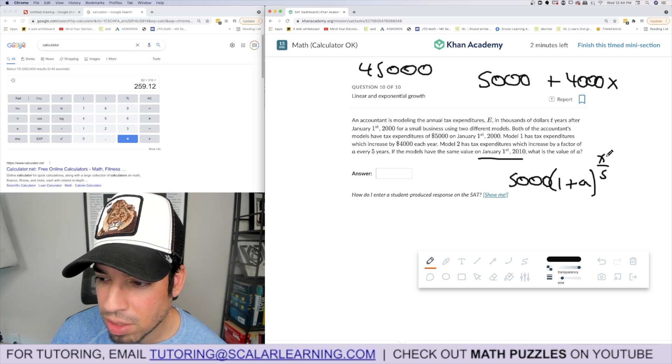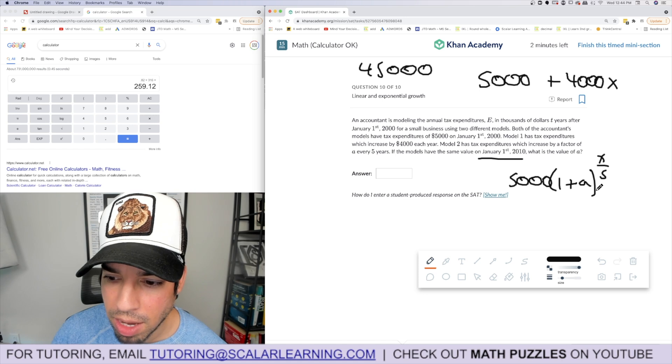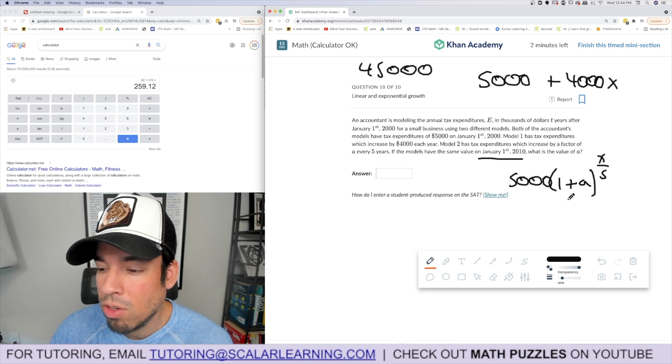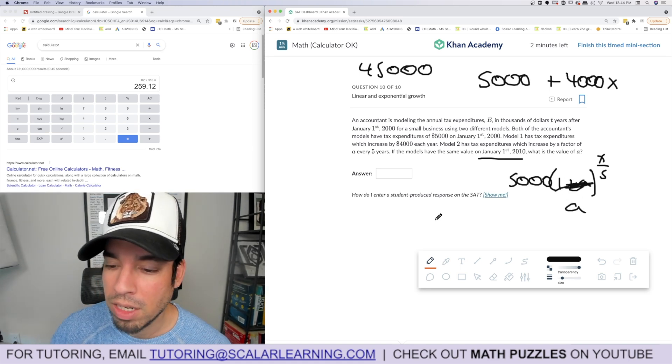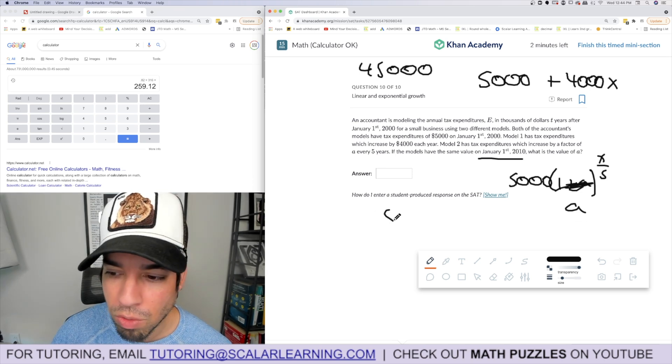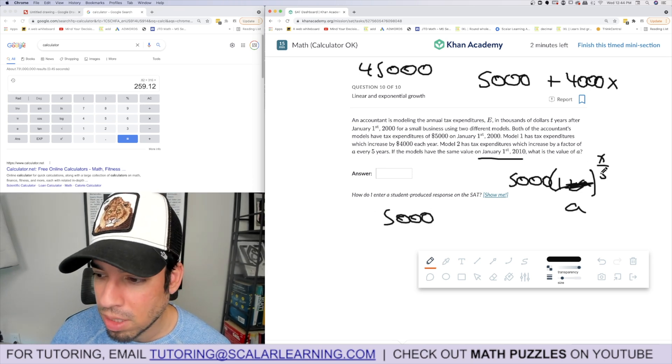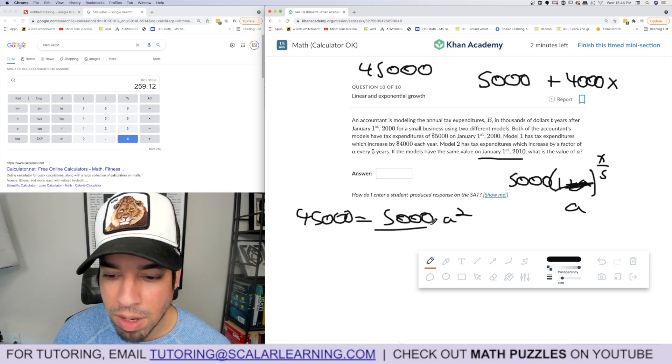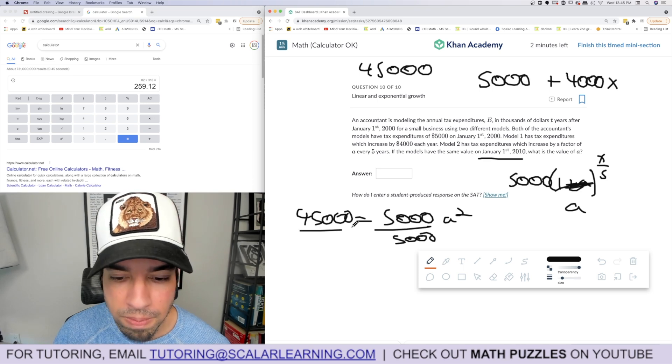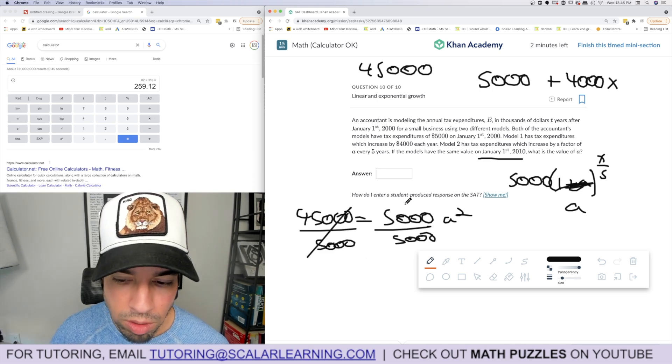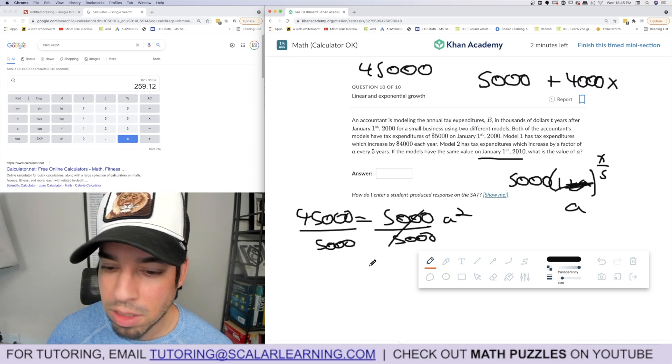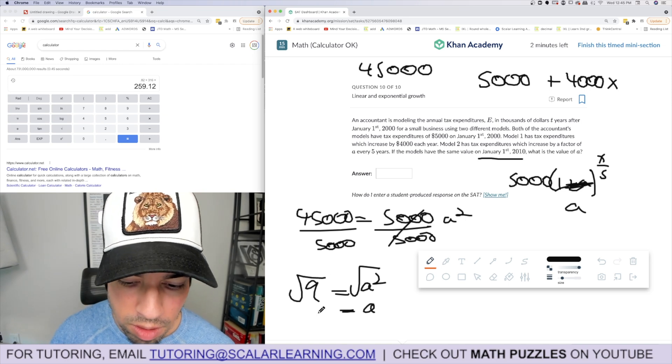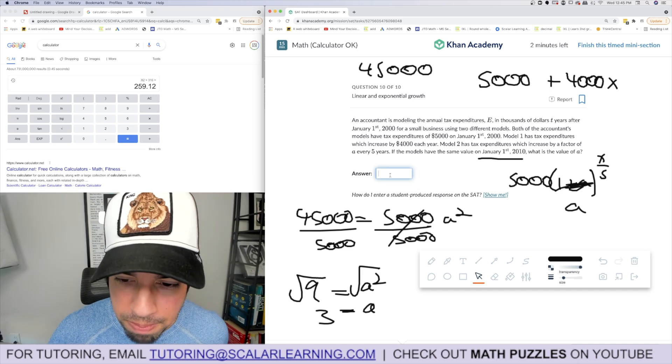They have the same value on January 1st, 2000, so if I plug in 10 for model 1, that's 10 times 4 is 40 plus 5 is 45,000. We need model 2 to be 45,000 in 10 years. If I plug in 10, that's x over 5 squared. So 5,000 times a squared equals 45,000. Divide by 5,000, a squared equals 9, and a equals 3. Basically it's tripling every 5 years. Let's just roll with it.